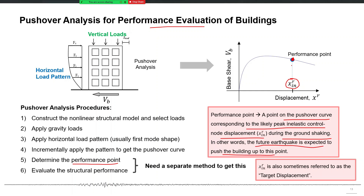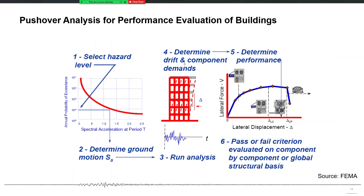The future earthquake is expected to push the building up to the performance point. This point on the pushover curve corresponds to the likely peak inelastic control node displacement, XRIN, during future ground shaking. There are several methods to determine this point and the corresponding displacement, which is also called the target displacement — the target up to which we should push our building if we want to use the results for seismic analysis.